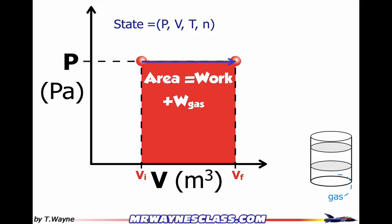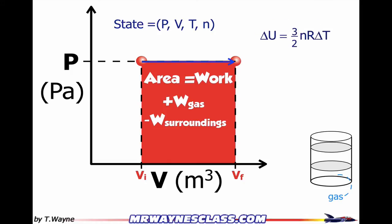And if it's positive work by the gas, we also know that that's going to be the opposite for the surroundings — so it's negative work of the surroundings. That's going to become important later on. I can find one more thing from all this, and that's the change in internal energy, which is 3/2 nR ΔT. Because from the ideal gas law, if I've got P, V, and n, I can find ΔT, and therefore the change in internal energy is 3/2 nR ΔT.